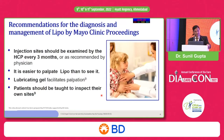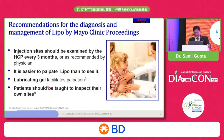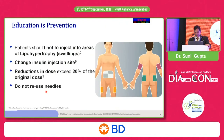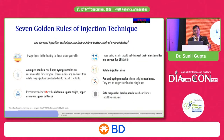Injection site should be examined every three months — that's the global recommendation. Lipohypertrophy is easier to palpate, and there is a model at the BD stall where you can feel how lipo looks and how to inspect it. Lubricating gel can be used to examine. The solution is not to allow insulin to be taken at the lipo site for at least one year, and to start properly rotating the site. Education for both clinicians and patients is important.